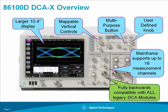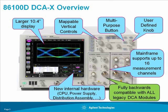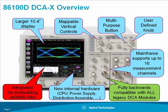There's a new user-defined knob, which makes it easy to adjust analog controls. The 86100D also has new internal hardware, including a new, more powerful CPU that allows the 86100D to perform de-embedding and embedding measurements on the instrument using 86100D option SIM.